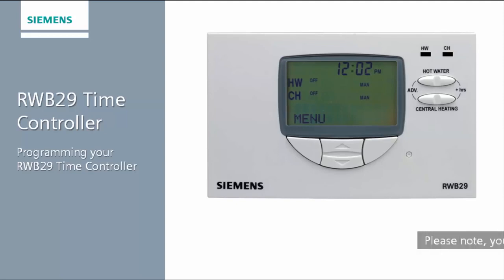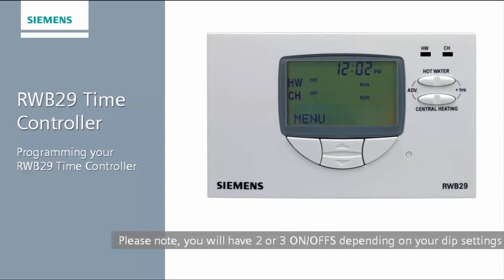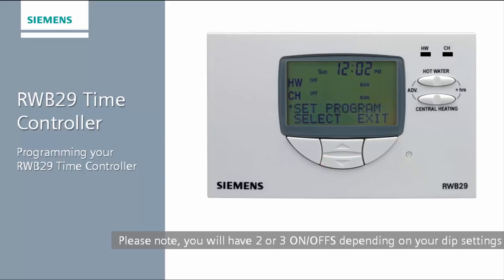To access the program setting menu, press the left hand button underneath the word menu. Then press the down button twice and you will see set program appear on the screen. Notice the word displayed above the left hand button now says select — go ahead and press select.